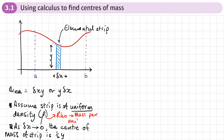We're assuming uniform density throughout. As the width delta x tends to zero, we can say that the centre of mass of the strip is going to be at half y — halfway up — that's where we'll have our centre of mass.